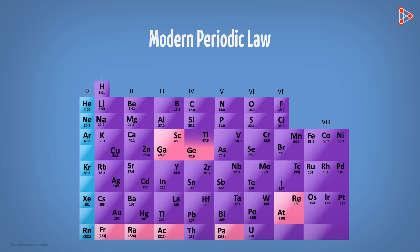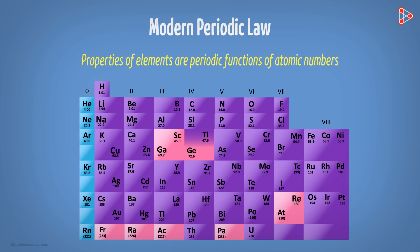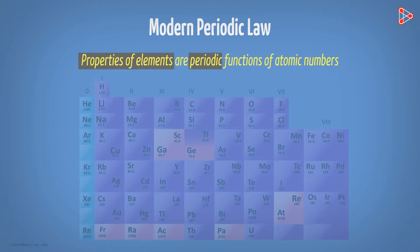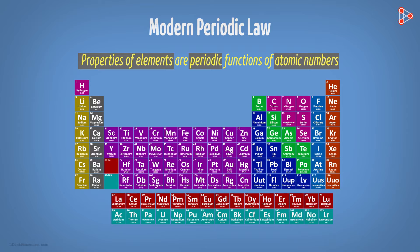It was called the Modern Periodic Law. The law stated that the properties of elements are periodic functions of atomic numbers. So what does this mean? This means that the physical and chemical properties of elements do occur periodically. But this happens when the elements are arranged according to their atomic numbers.